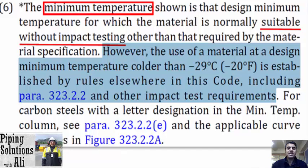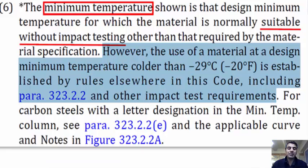However, the use of material at a design minimum temperature colder than minus 29 degrees Celsius or minus 20 degrees Fahrenheit is established by rules elsewhere in this code, including paragraph 323.2.2 and other impact test requirements. For carbon steels with a letter designation in the minimum temperature column, see paragraph 323.2.2E and the applicable curve and notes in figure 323.2.2E.